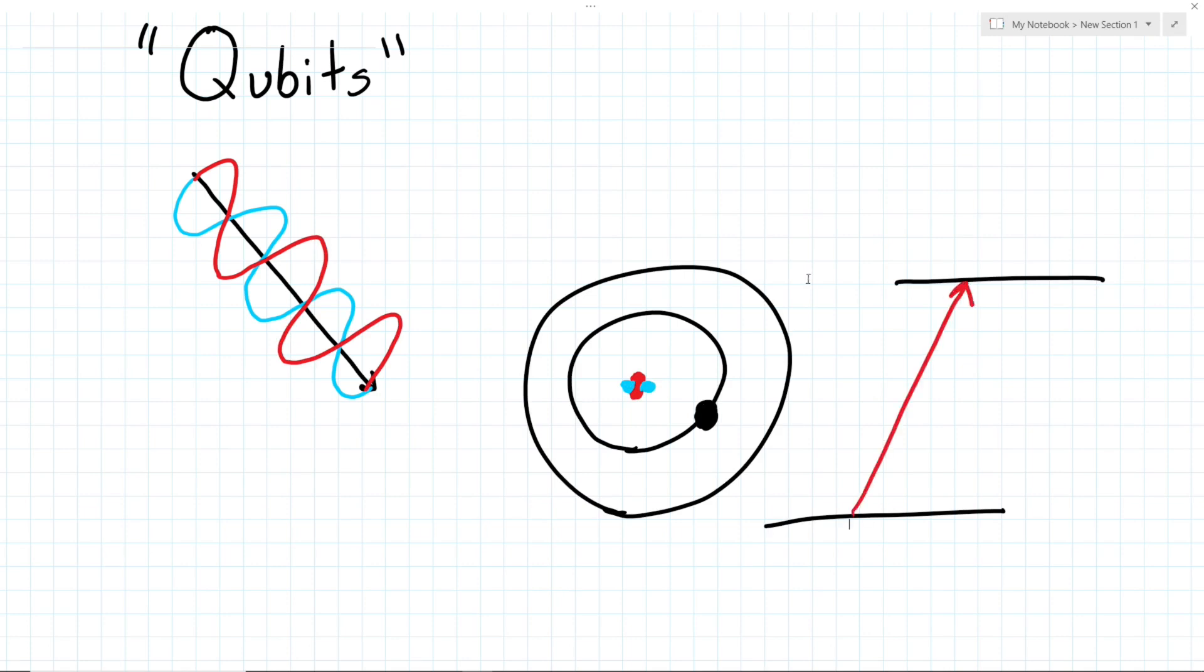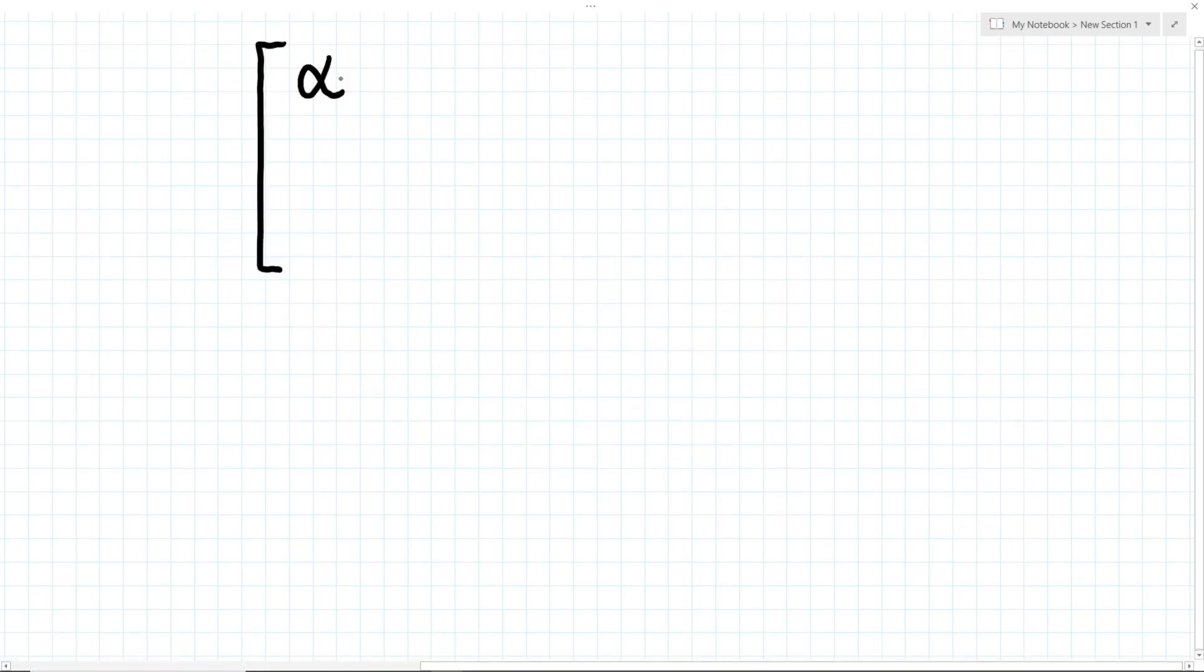Fortunately, we do not have to concern ourselves with how a qubit is physically implemented. The math that describes each scenario is identical and surprisingly simple. To represent a qubit, we just need a vector of two numbers.